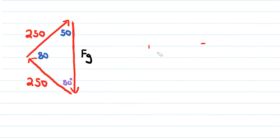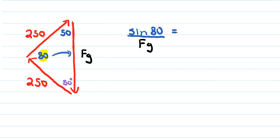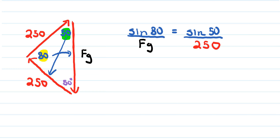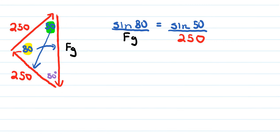Now let's solve for FG using the sine law. The 80-degree angle is opposite FG, so we set up sine of 80 degrees divided by FG. That equals sine of 50 degrees divided by its opposite side, 250. That's how you use the sine law for this question and our goal is to solve for FG.